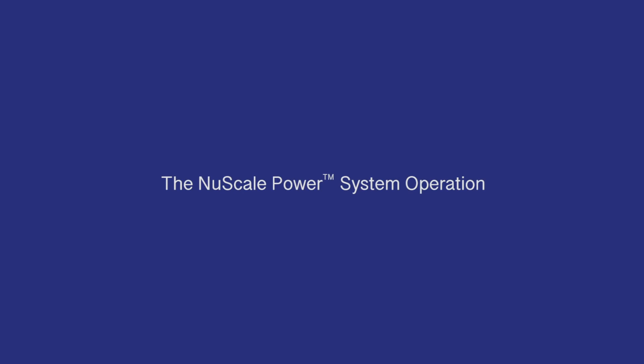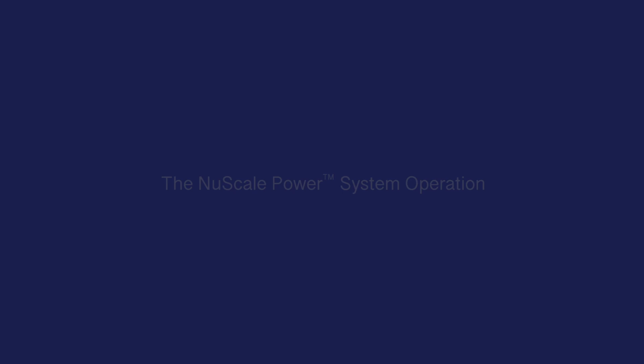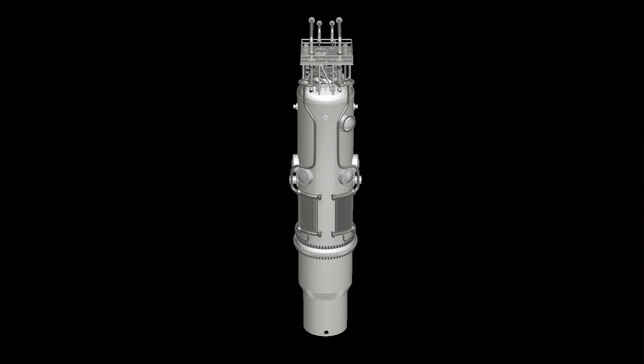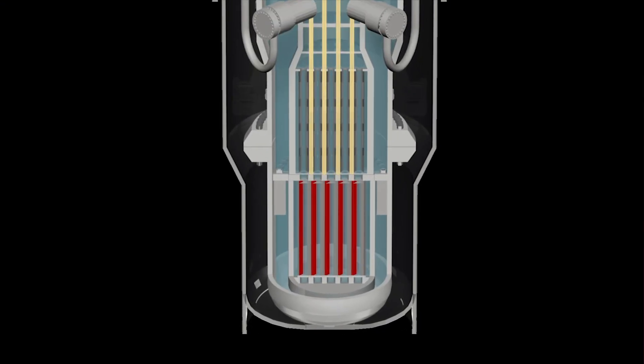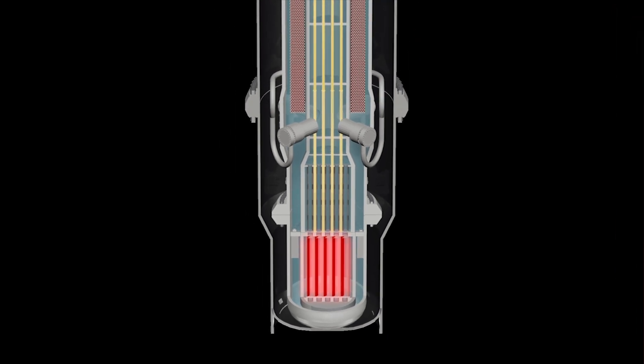The new scale power system operation. Control rods retract from the fuel, allowing a fission process inside the fuel rods to produce heat.